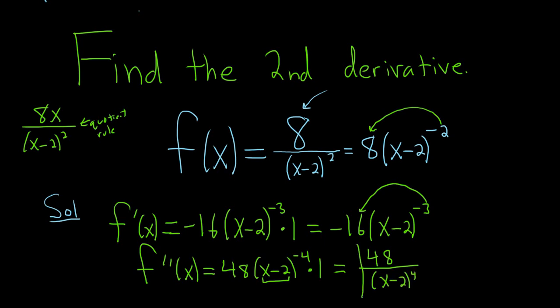And that is the final answer. The most important thing to take away from this problem is that whenever you have a fraction with a number on top, just bring the bottom upstairs and avoid the quotient rule. It's a super useful technique. I hope this video has been helpful.